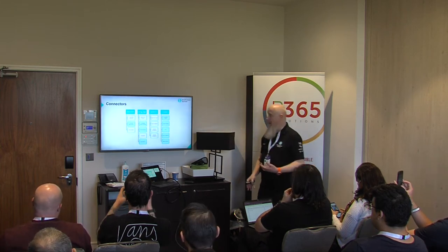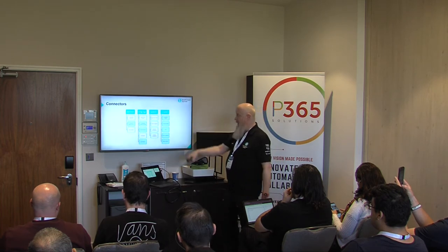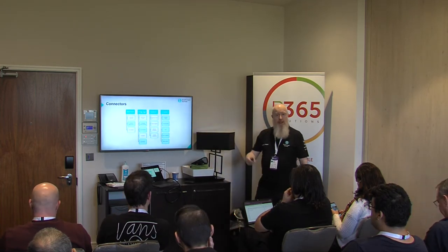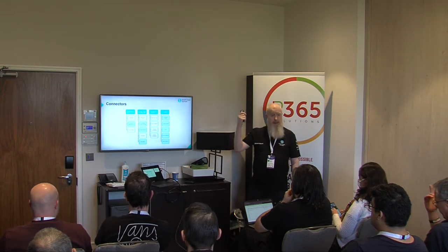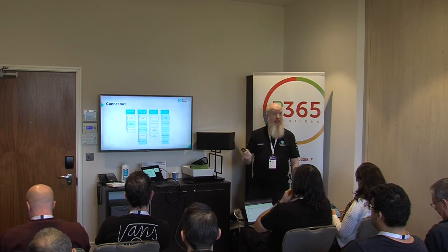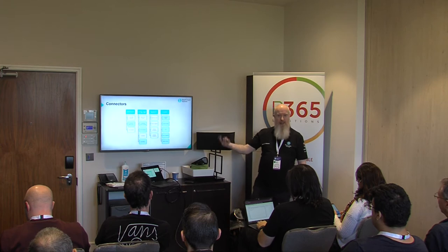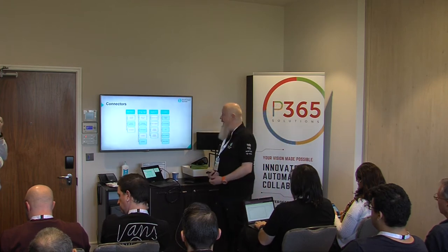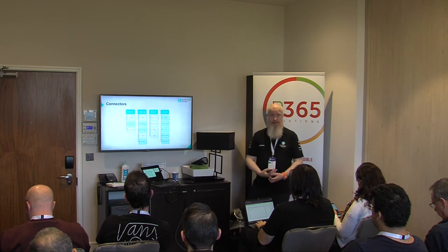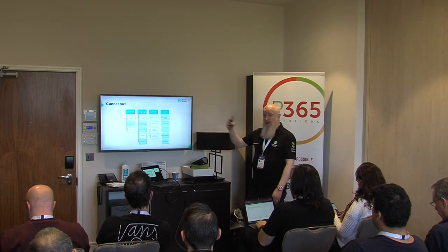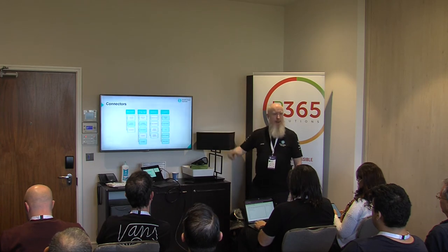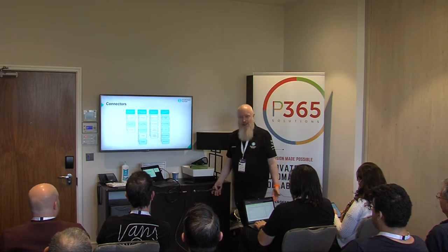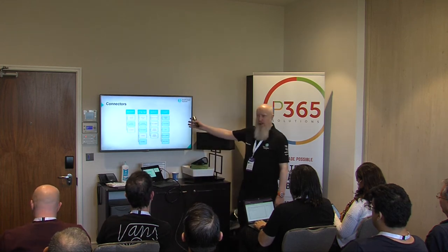We don't have connectors for everything — we don't have anything on the speech side or the translator. But it's just an HTTP call. Who here knows how to create a custom connector? You can create a custom connector for these if you want, or you can just use the HTTP connector to call them. They just return JSON — so these are really easy to consume. And they're cheaper. To be honest, if I do any AI, I use these and not AI Builder because it's so expensive. These are so cheap to use.